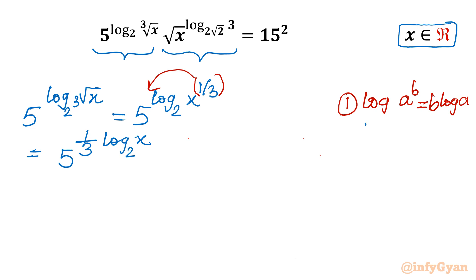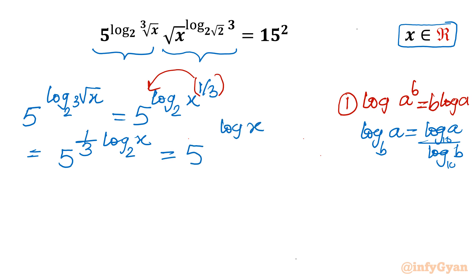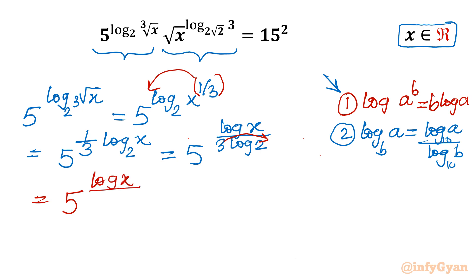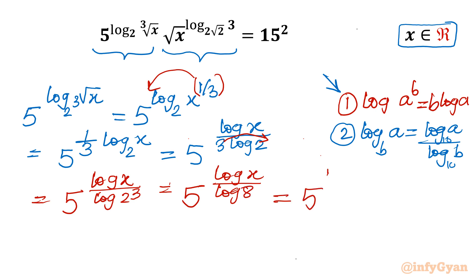Now I will use the change of base property: log a base b equals log a divided by log b (both base 10). So this becomes 5^(log x / (log 2 · 3)). Using the exponent property again, that 3 becomes an exponent of 2 in the denominator, giving 5^(log x / log(2³)) = 5^(log x / log 8), which we write as 5^(log x base 8). This is our first simplification.